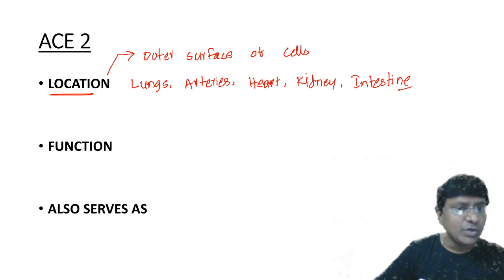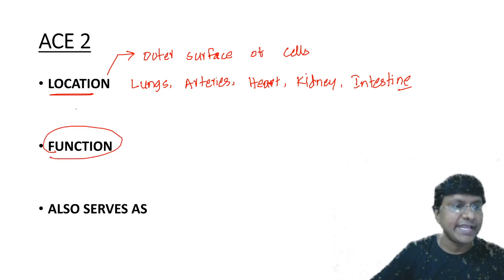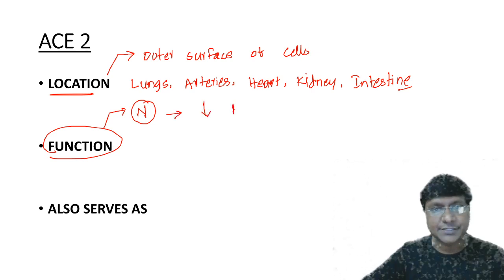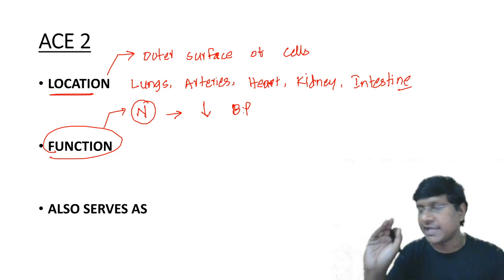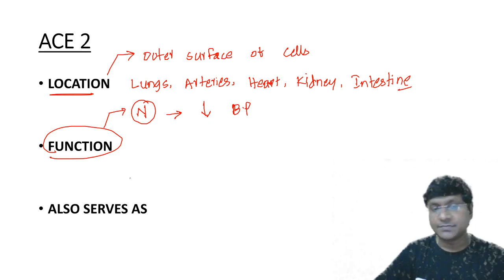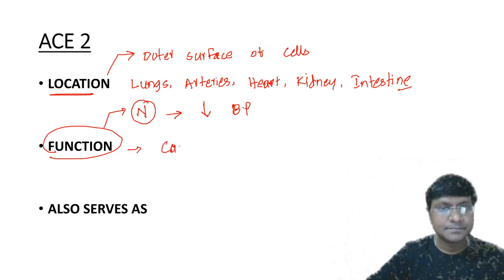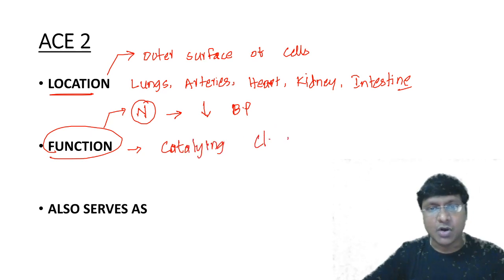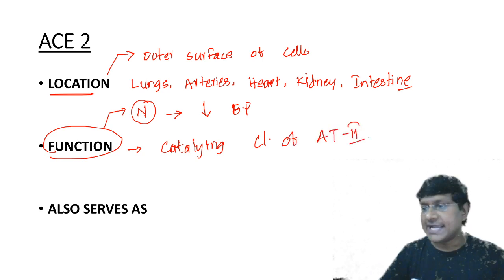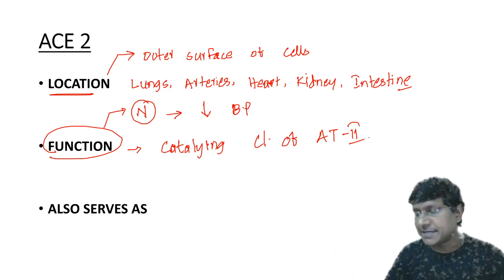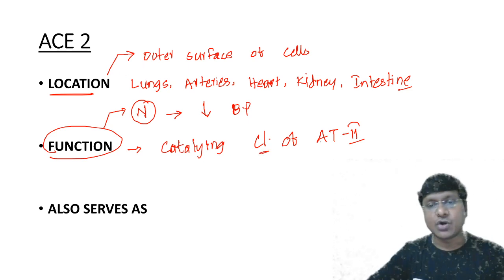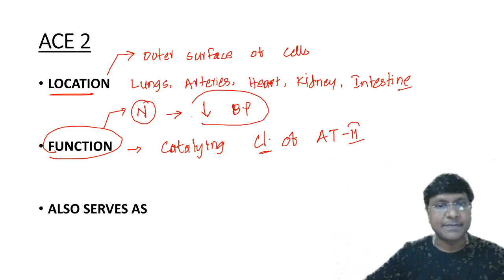The function of ACE2 in normal human beings is to reduce blood pressure by catalyzing the cleavage of angiotensin 2. Angiotensin 2 is a potent vasoconstrictor that increases blood pressure, so ACE2 cleaves angiotensin 2 and thereby reduces blood pressure in a normal individual.